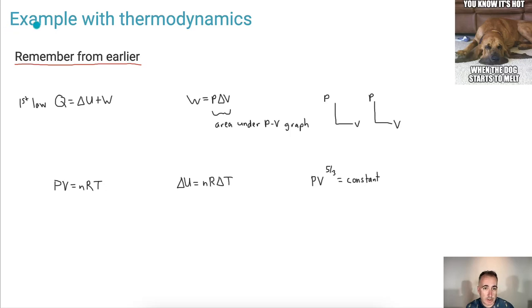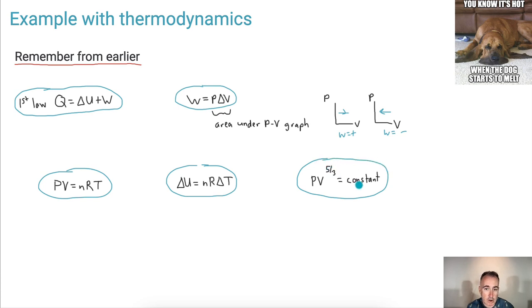Let's look at an example with thermodynamics. You know it's hot when the dog starts to melt. Let's remind ourselves: first law relates Q, which is the heat, and the internal energy and the work done. Remember it's the area under the graph, which means if it goes this way the work is positive. If it goes left then work is negative. Don't forget about PV equals NRT. We know the change in internal energy equation and we also have that PV to the power of five-thirds is a constant, which means PA VA to the five-thirds equals PB VB to the five-thirds and so on.